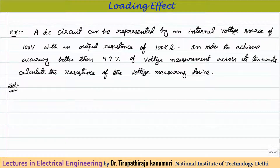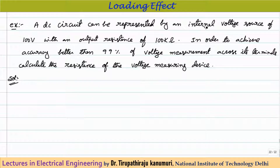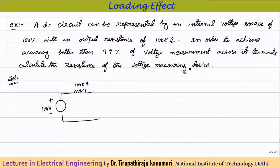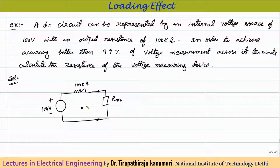To understand this further, consider a numerical example. A DC circuit is represented by an internal voltage source of 100 volts with an output resistance of 100 kilo-ohms. To achieve accuracy better than 99% for the voltage measurement across its terminals, calculate the required resistance of the voltage measuring instrument, represented as Rm.